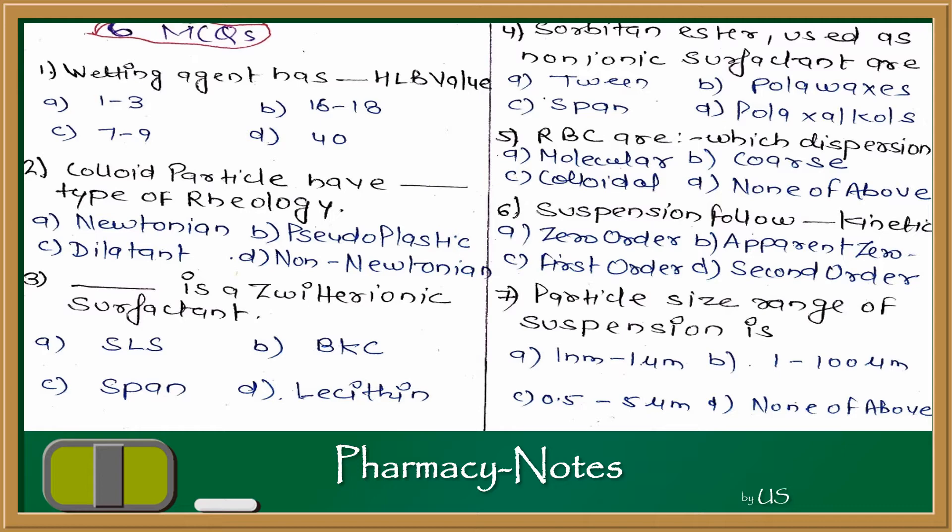Then, if we talk about Colloidal Particle Type of Rheology - which type do colloidal particles show? In the 4th semester, you have a chapter on viscosity. We learn there are two types of flows: One is Newtonian, which follows Newton's law, and one is Non-Newtonian, which doesn't follow Newton's law.